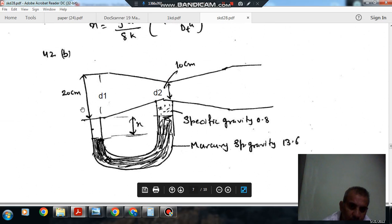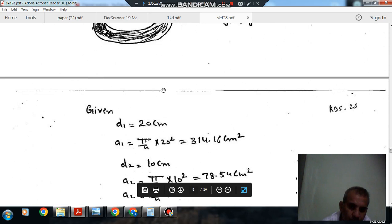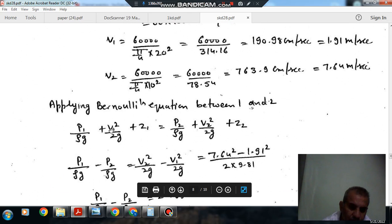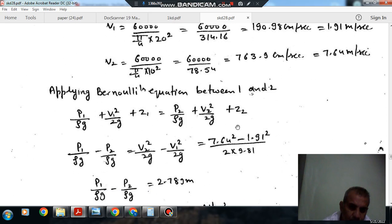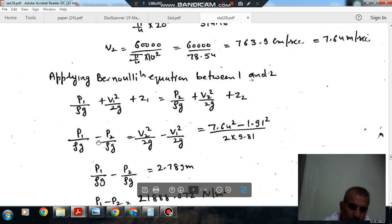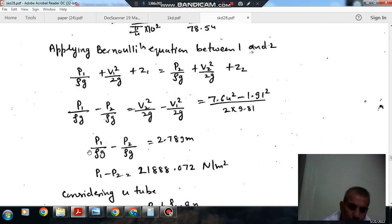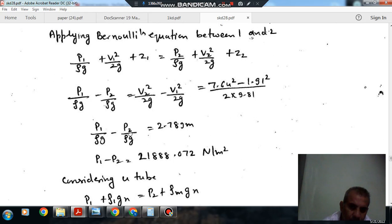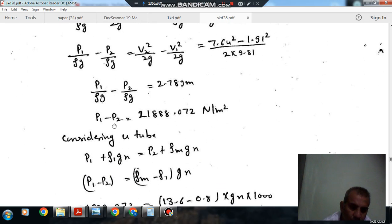Now applying Bernoulli's equation between 1 and 2, we have P1 by rho g plus V1 square by 2g plus Z1 equals P2 by rho g plus V2 square by 2g plus Z2. From this, we have P1 minus P2 by rho g as V2 square minus V1 square by 2g, which equals 2.789 meter. Or P1 minus P2 is 21888.072 newton per meter square.